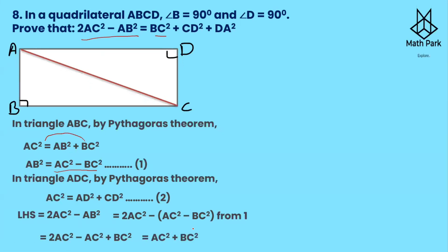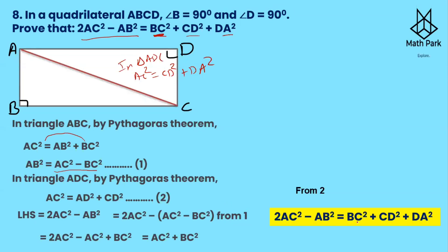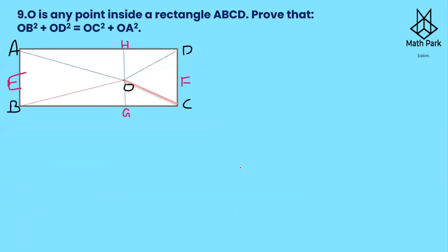We have 2AC² − AB² = AC² + BC². Now BC² is already on the right side. For AC², from equation two, AC² = CD² + DA². Substituting, we get 2AC² − AB² = BC² + CD² + DA². So in place of AC² we wrote CD² + DA², giving us 2AC² − AB² = BC² + CD² + DA².